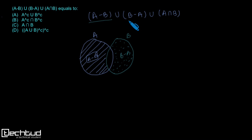This is A minus B, this is B minus A. And what is A intersection B? A intersection B is this part, right?